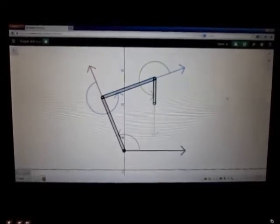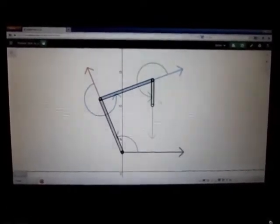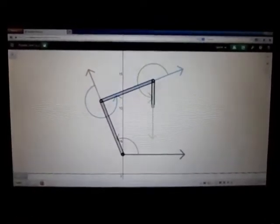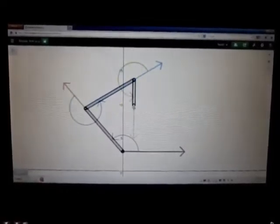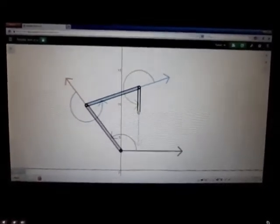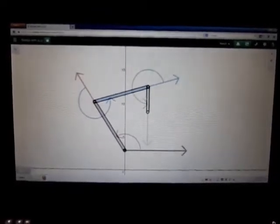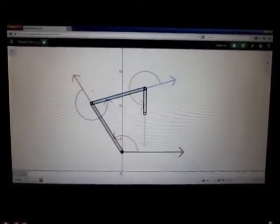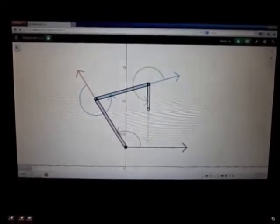Using Desmos, we have created a rendering of a two-dimensional version of our robotic arm. If you see here, we can move the end effector, and it automatically calculates the angle of each segment of the arm. We do this using the law of cosines.